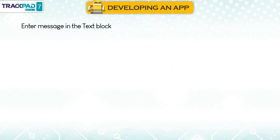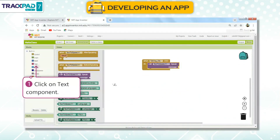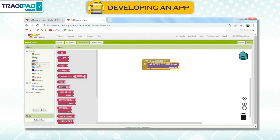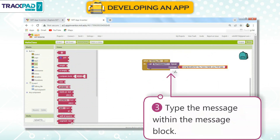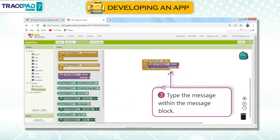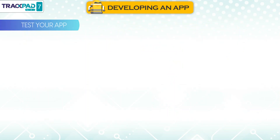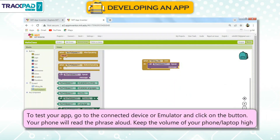Enter Message in the Text Block: First, click on the Text component. Second, drag and drop the Message block onto the 'Call Text-to-Speech 1 Message' block. Third, type the message within the Message block. Test Your App: To test your app, go to the connected device or emulator and click on the button. Your phone will read the phrase aloud. Keep the volume of your phone or laptop high.